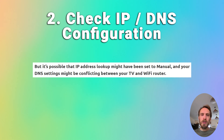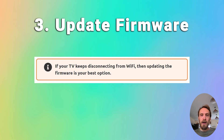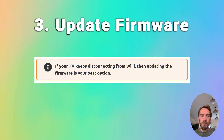You can also try updating your TV's firmware. If your TV keeps disconnecting from Wi-Fi, updating the firmware is usually the best option. That will be somewhere in settings, then support, then software update. Make sure auto update is on, and there should also be a check now or update now button. Older models of TV might need to update the firmware by USB, and there are steps on how to do this in the linked article below.